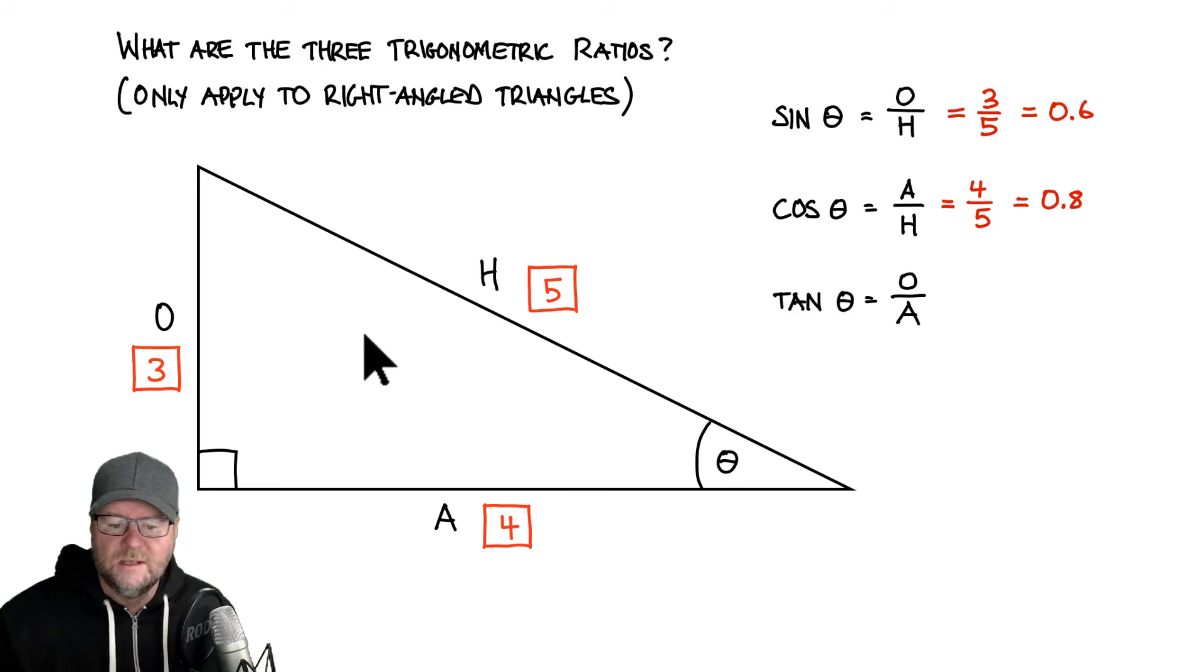Finally, the tan is the opposite over the adjacent. So three over four, which gives me a value of 0.75.